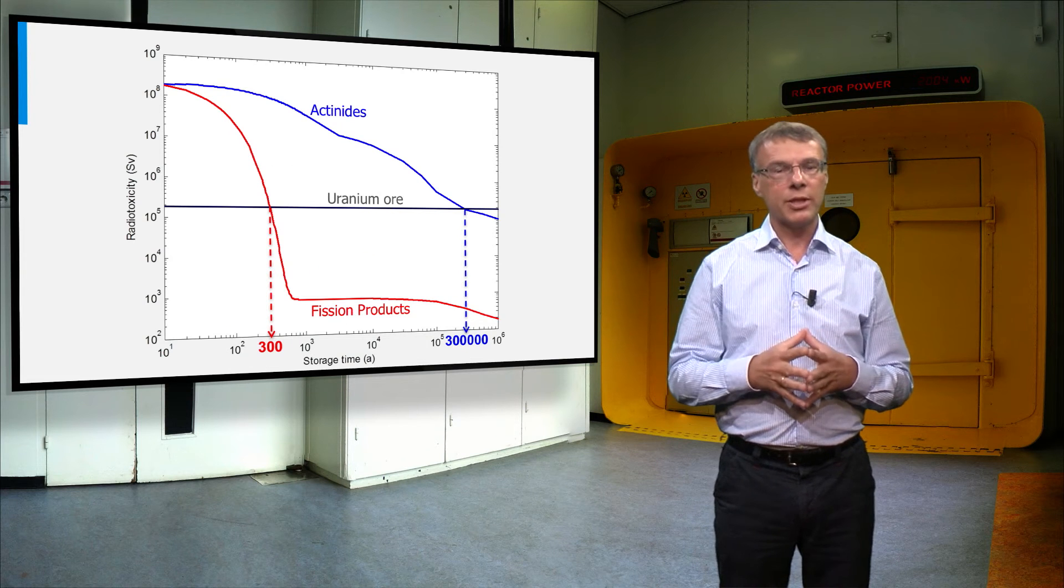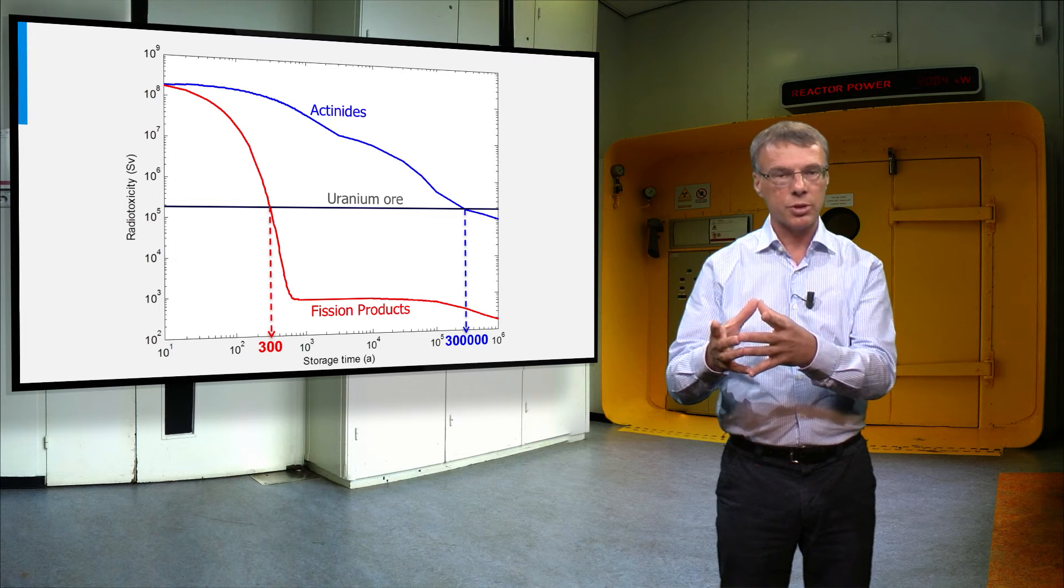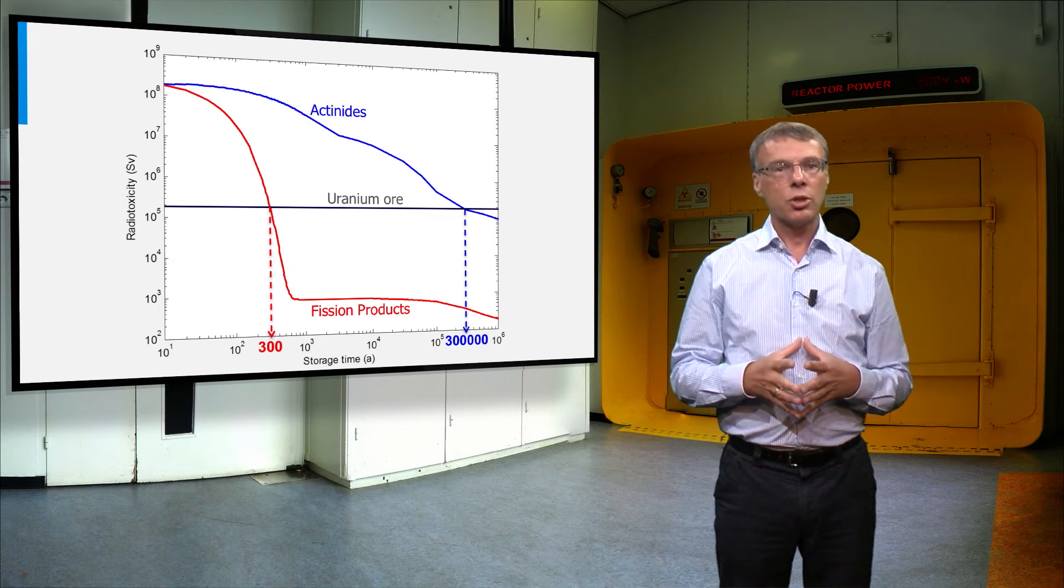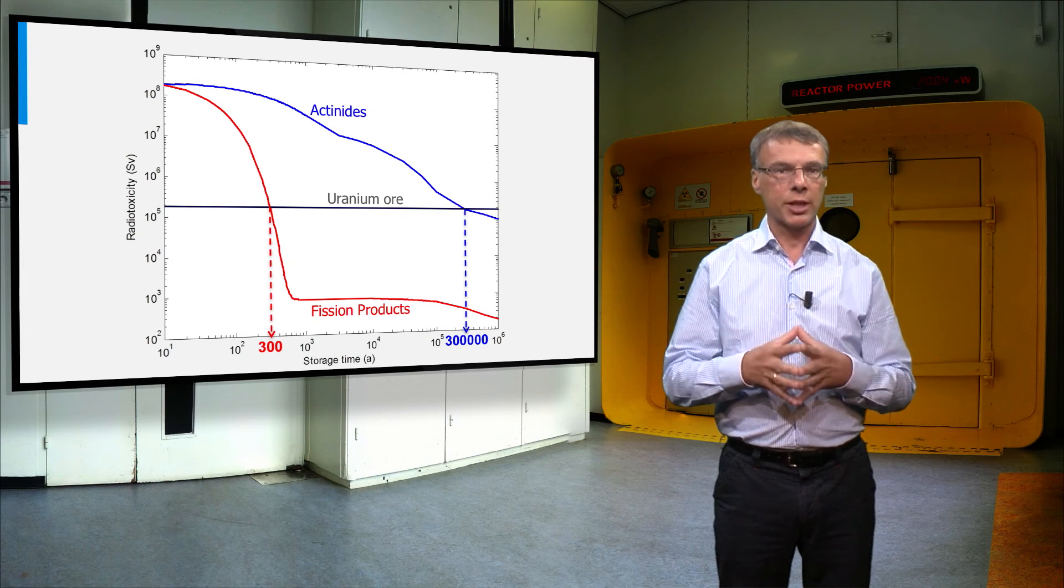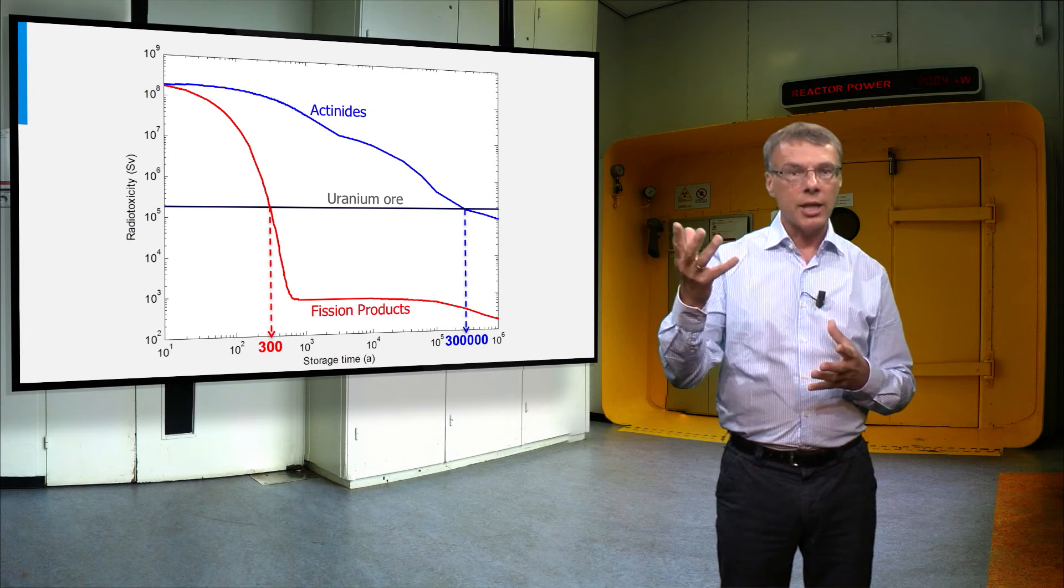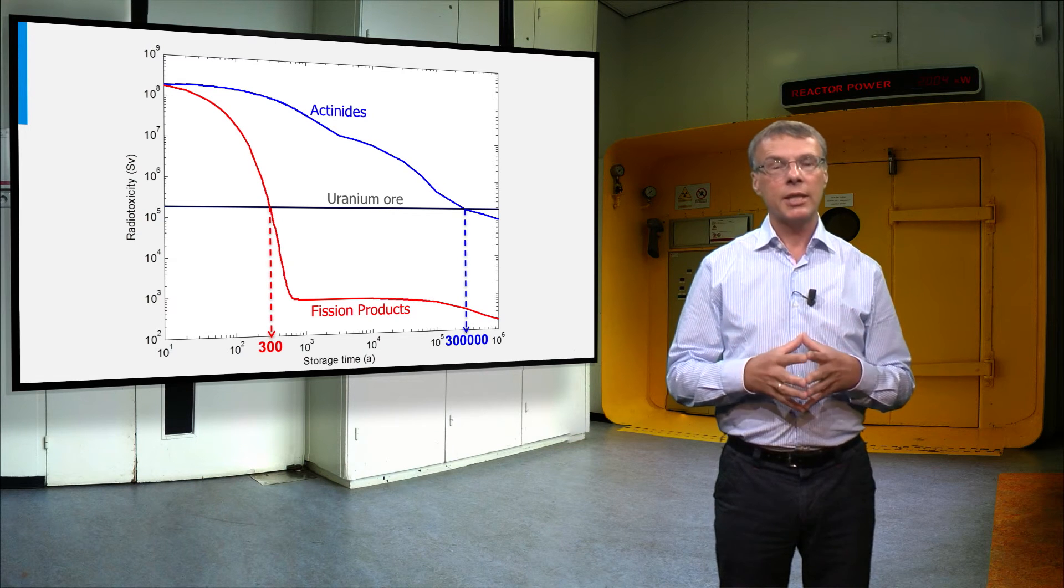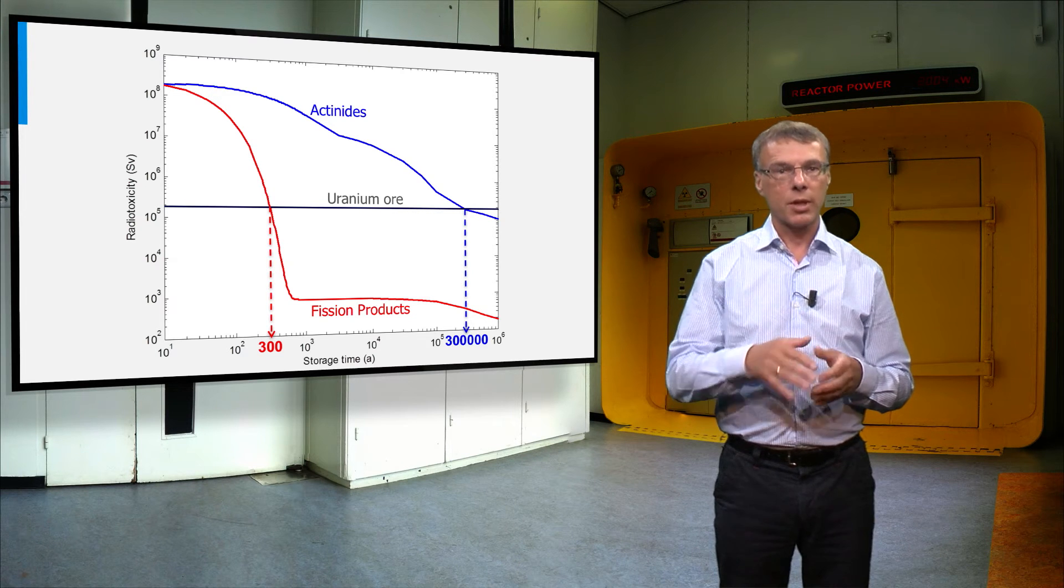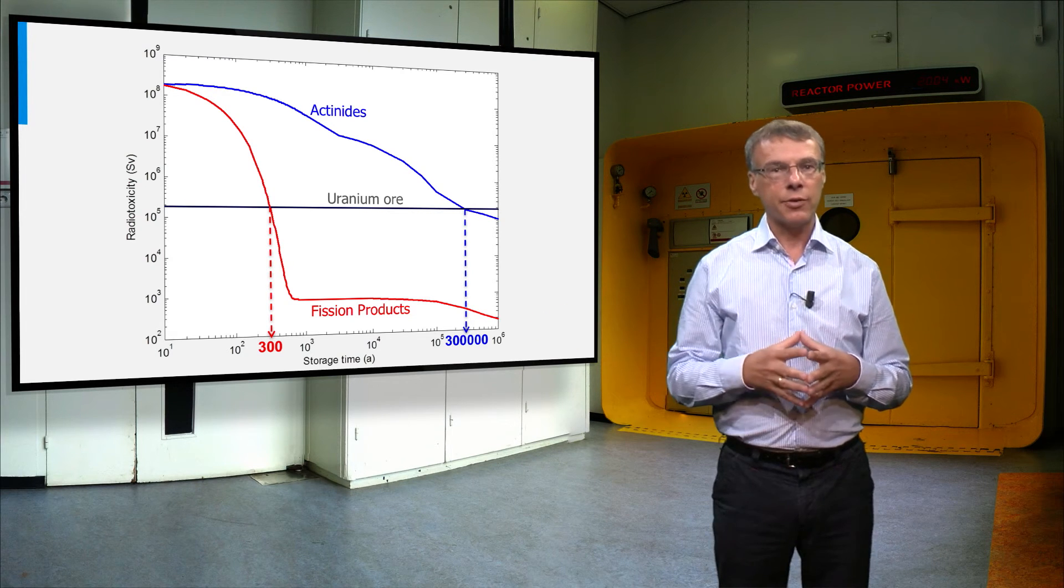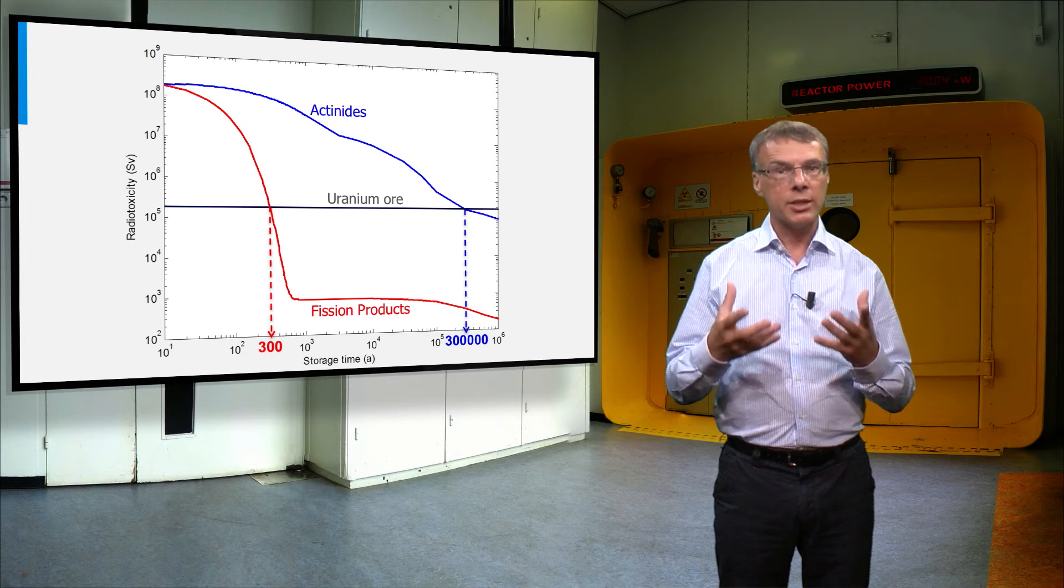One of the main benefits of the molten salt reactor is the composition of the nuclear waste it produces. This plot shows the radiotoxicity of spent fuel of a typical light water reactor. The red line is the contribution of the fission products, while the blue line is that of the plutonium and americium in the spent fuel. The horizontal line is a reference level, belonging to the natural uranium in the ore and its decay products.